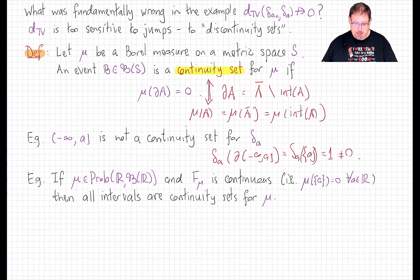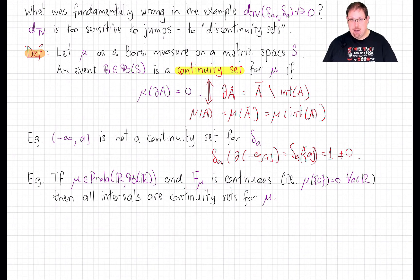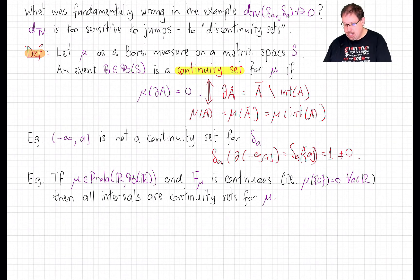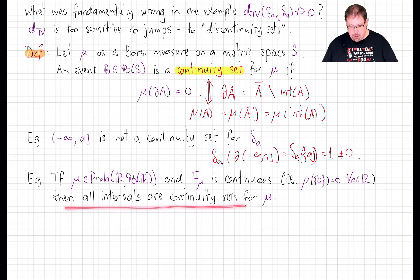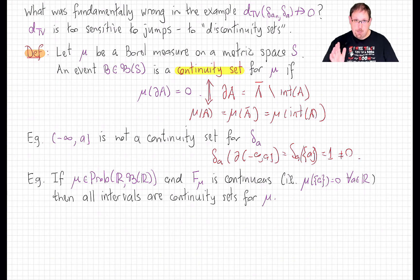Here's a feature that will be important in future lectures. Suppose we have a Borel probability measure on the real line determined by its CDF. If the CDF is a continuous function — what undergraduate probability calls a continuous random variable, meaning precisely that the measure assigns no mass to any singleton point — then all intervals are continuity sets for mu, because the boundary of an interval is always a collection of zero, one, or two points. However, not all sets are continuity sets even in this setting.